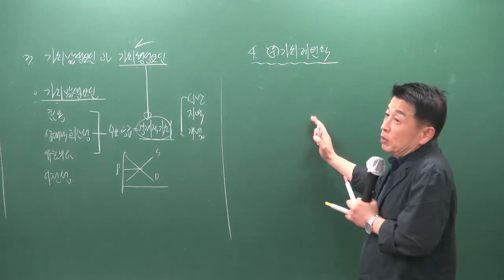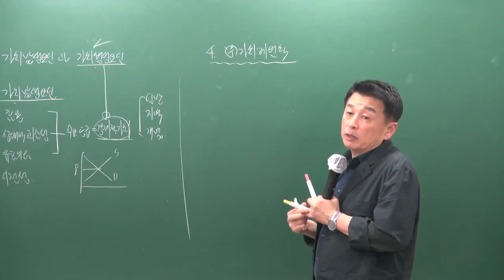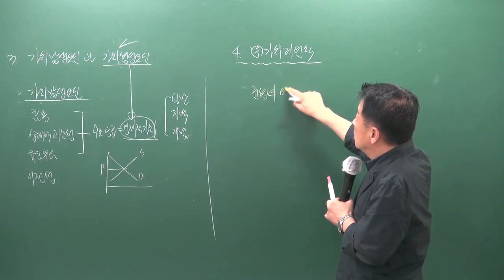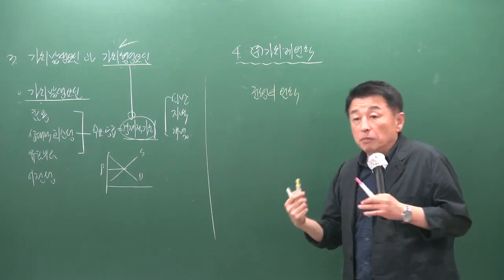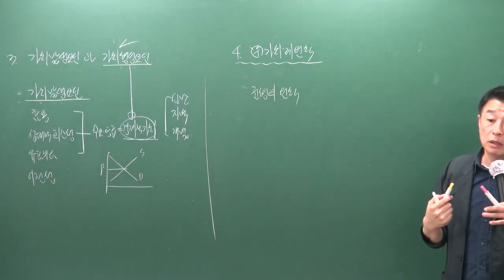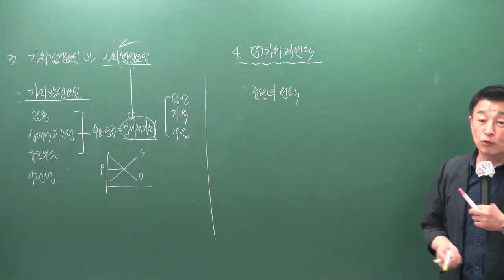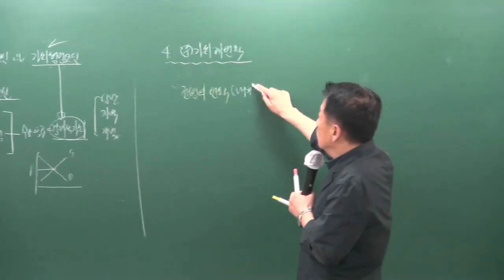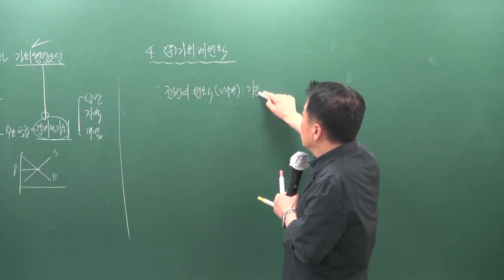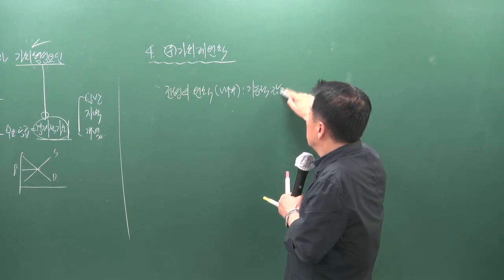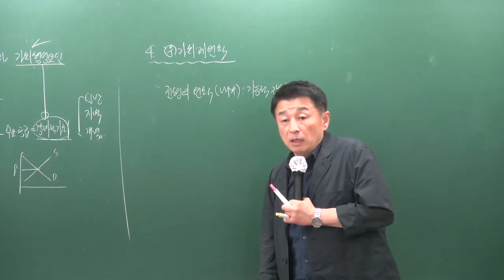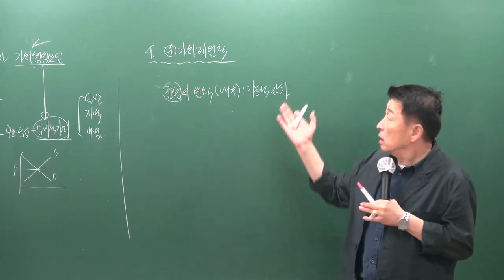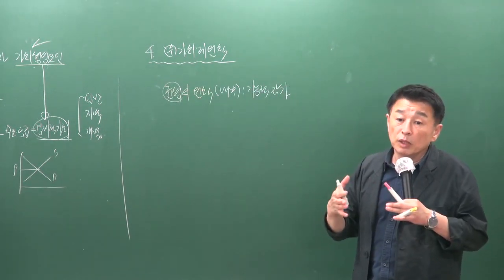가치재원칙에서 문제가 나왔을 때 가장 중심이 되는 것은 균형의 원칙입니다. 20회 이후 대다수의 답이 균형의 원칙을 기준으로 출제되었습니다. 균형의 원칙은 내부적 측면의 원칙으로, 기능적 감가를 판단하는 데 활용됩니다. 균형이란 밸런스를 의미하며, 밸런스가 안 맞으면 감가를 적용합니다.